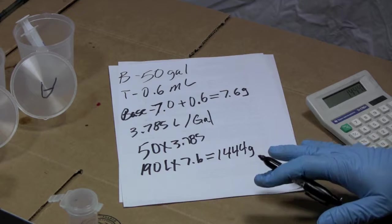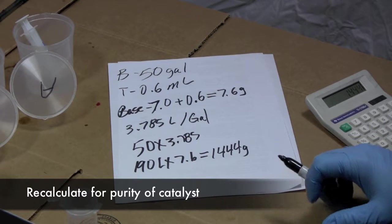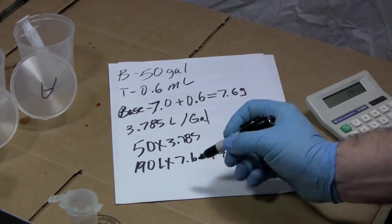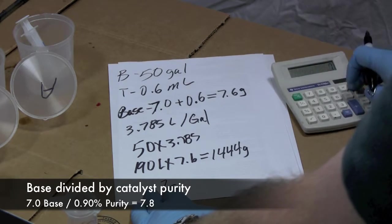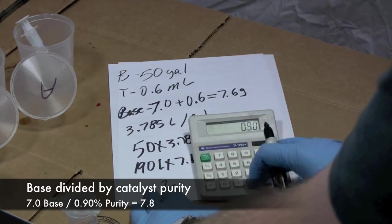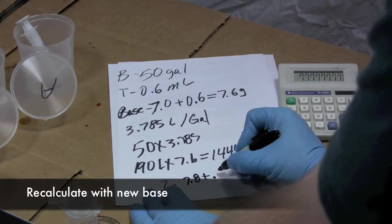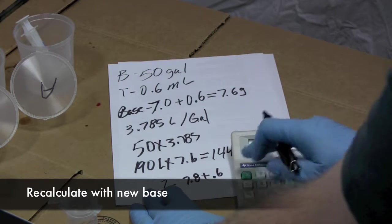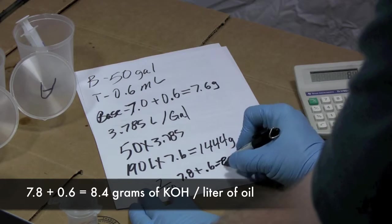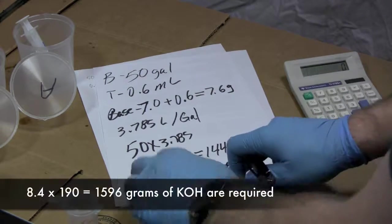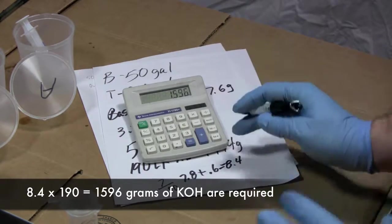Okay. Now, if my potassium hydroxide was absolutely pure, this is what I would use. However, we're using potassium hydroxide that's about 90% pure, so we need to alter this a little bit. Let's come back to our base. How we do that is we take our base of 7, assuming pure, and we divide it by 0.90. 7 divided by 0.90 is 7.7, or I'm going to round up to 7.8. So 7.8 plus my 0.6, 8.4 times that by my 190. I get 1,596 grams.